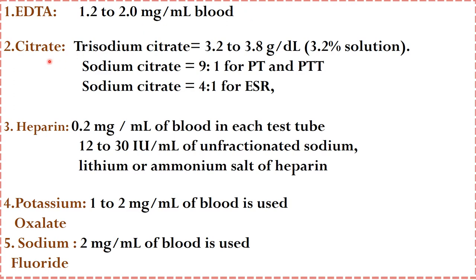Similarly, the citrate ratio is also mentioned here — for most parameters, 3.2 to 3.8 grams per deciliter is needed, but for prothrombin time and for ESR the sodium citrate ratios are different. In case of heparin, it is 0.2 milligrams per ml of blood in each tube, or 12 to 30 IU per ml of unfractionated sodium, lithium or ammonium salt of heparin. In potassium oxalate, 1 to 2 milligrams per ml ratio is used, whereas for sodium fluoride, up to 2 milligrams per ml is used.